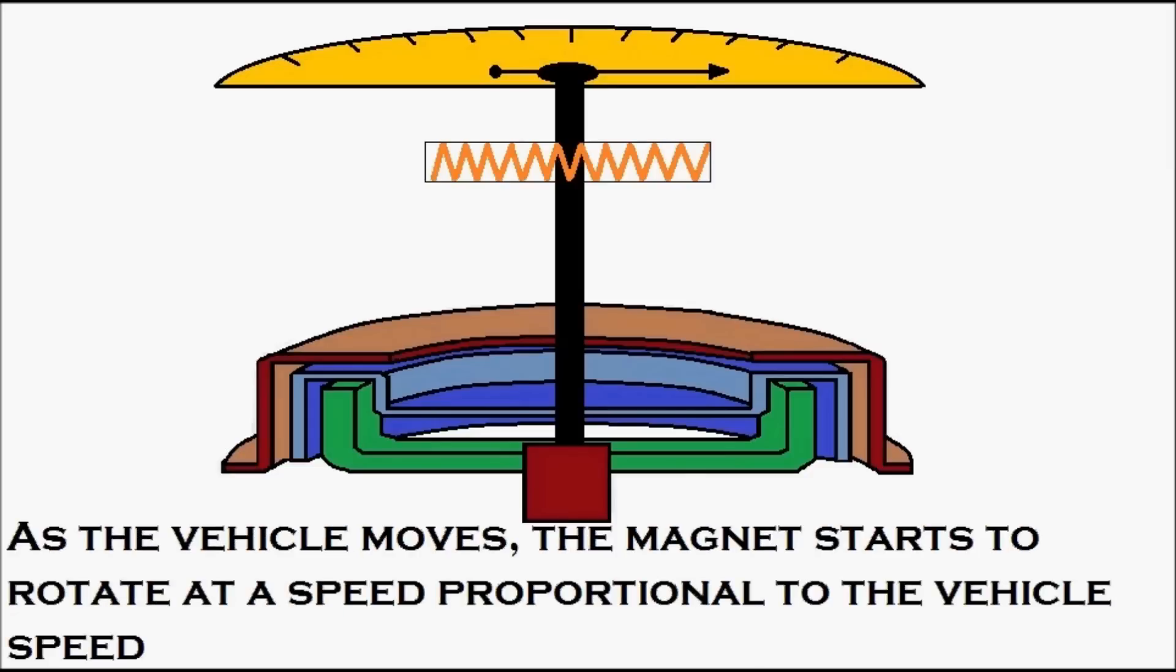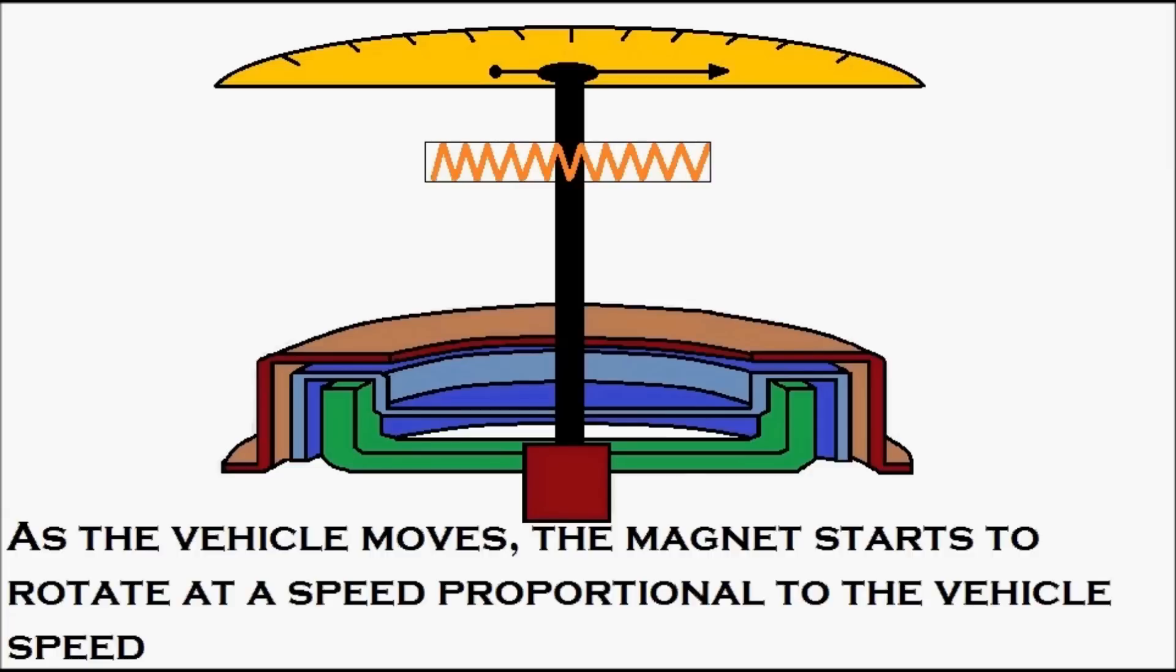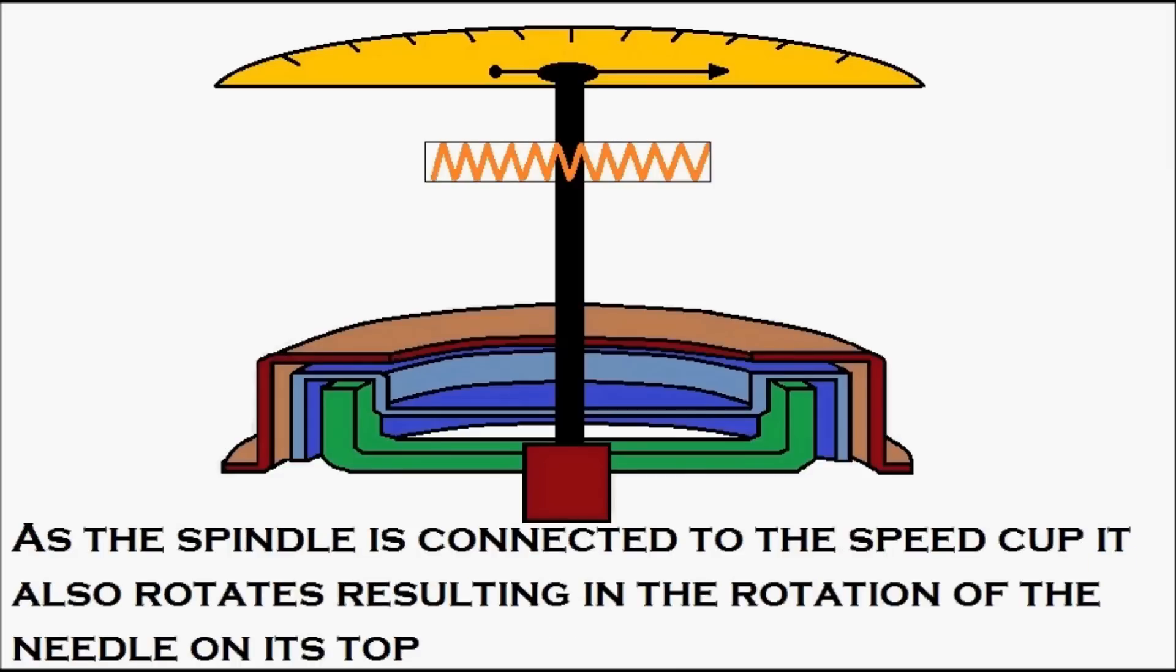As the vehicle moves, the magnet starts to rotate at a speed proportional to the vehicle speed, and this produces a magnetic field resulting in the rotation of the speed cup, which is in blue, as the spindle is connected to the speed cup.